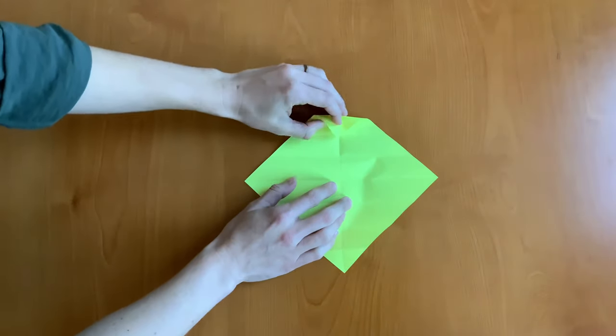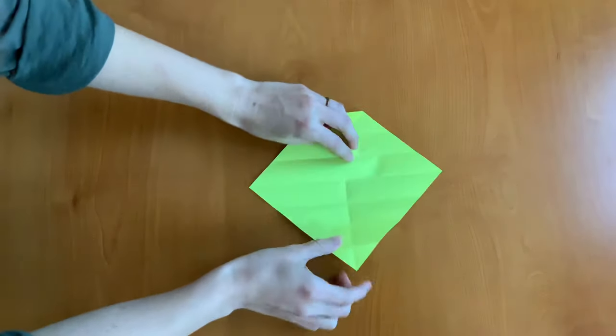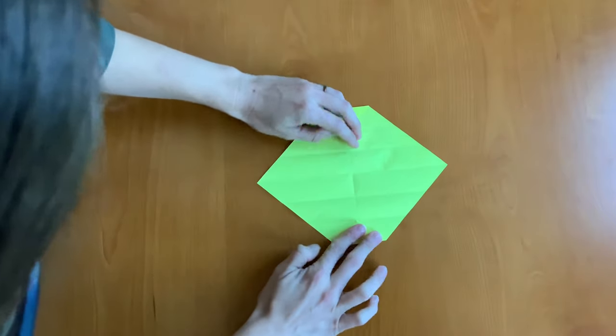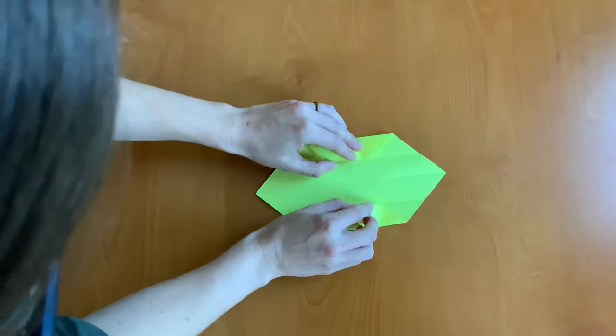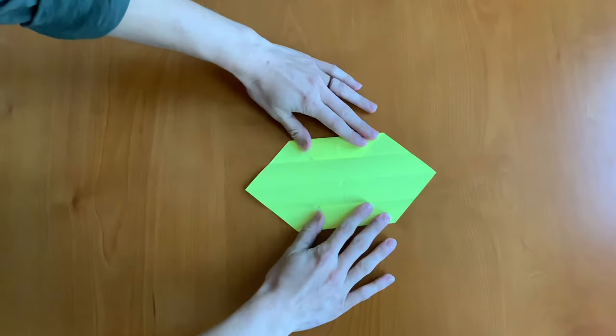Next you want to fold the top and bottom corners in at the crease, at the top crease and at the bottom crease. And then we're going to fold one more time in. Just like that.